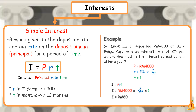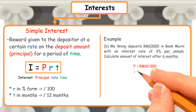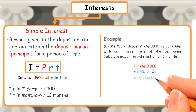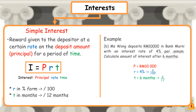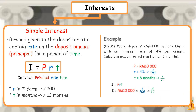Example B: Ms. Wong deposits RM10,000 in Bank Morne with an interest rate of 4% per annum. Calculate the amount of interest after 6 months. Based on the question, P is RM10,000, R is 4% which equals 4/100, and T is 6 months which equals 6/12. Using the formula I equals PRT: I equals RM10,000 times 4/100 times 6/12, equals RM200. Therefore, the interest is RM200.